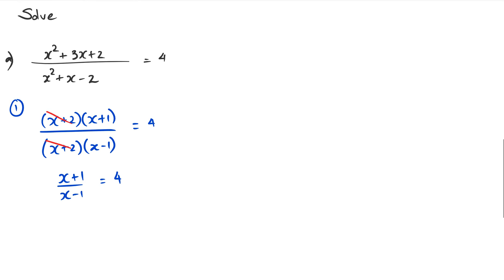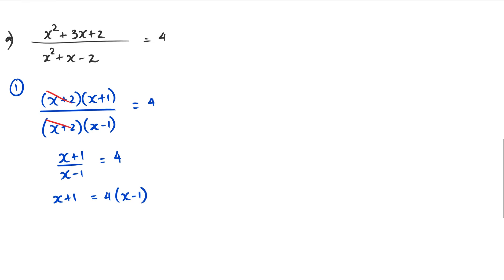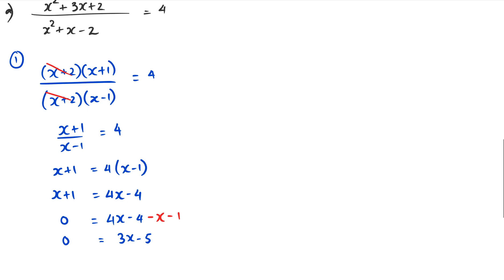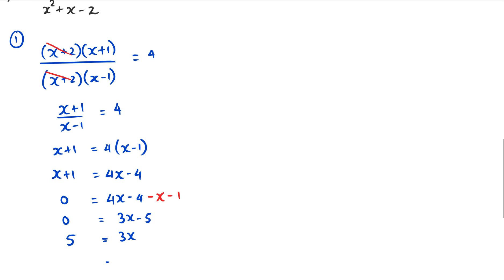Now we cross-multiply: x + 1 = 4(x − 1). Expanding gives 4x − 4, and rearranging everything to one side we get 0 = 4x − 4 − x − 1, which simplifies to 0 = 3x − 5. Rearranging, 3x = 5, so x = 5/3. That's our answer from method one.